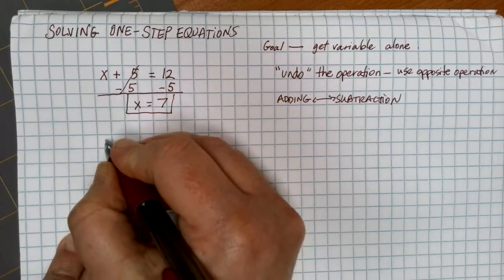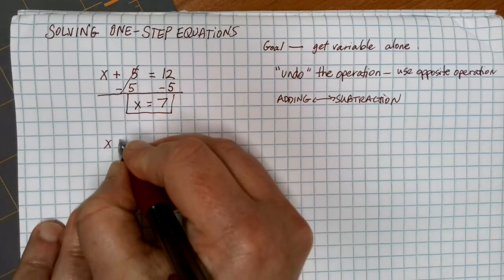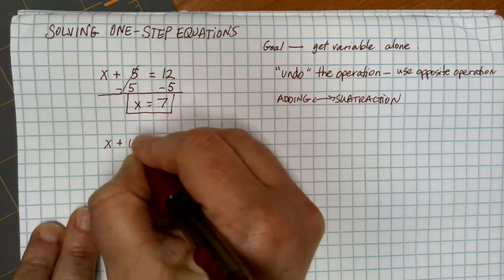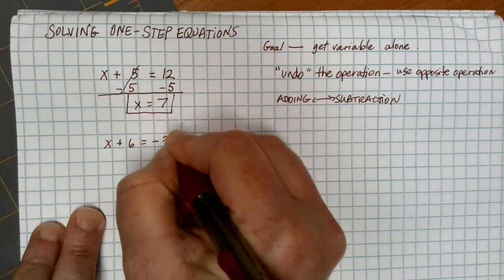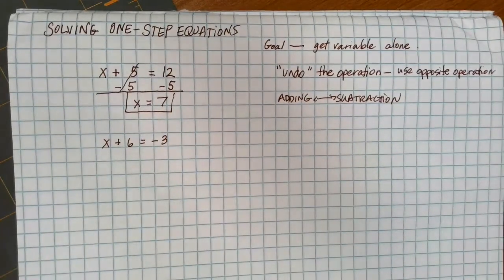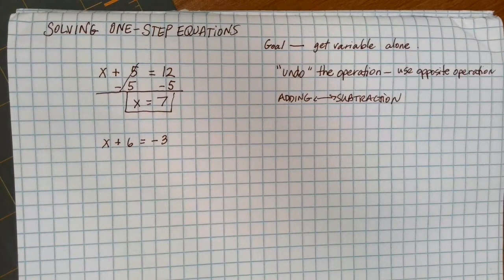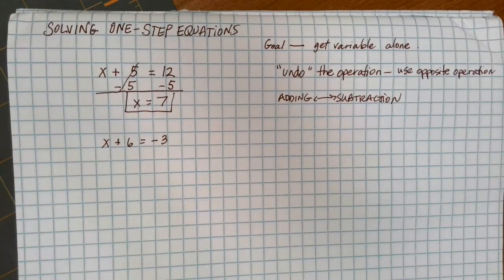Now, keep in mind, as we're solving equations, let's suppose that I have x plus 6 is equal to negative 3. So as we're dealing with these equations, we might still have to deal with our positive and negative rules, but we just bring those back to mind.